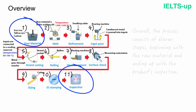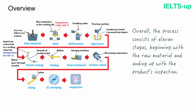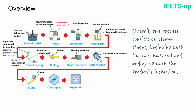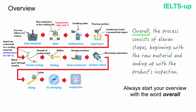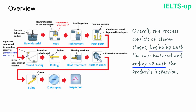In our case, the general overview looks like this: 'Overall, the process consists of 11 stages, beginning with the raw material and ending up with the product's inspection.' As you see, the diagram's overview is quite short — only one sentence — and your overview should not be long either. One or two sentences is ideal. Always start your overview with the word 'overall' — it indicates to the examiner that you are going to describe general trends. Then give the number of stages, and also write how your process begins and ends, using phrases 'beginning with' and 'ending up with.' This is the structure: 'Overall, the process consists of X stages, beginning with something and ending up with something.'